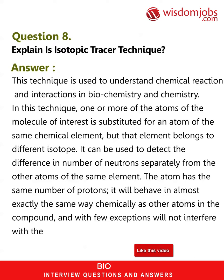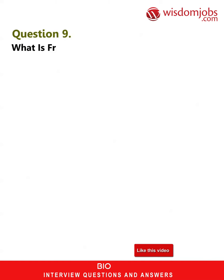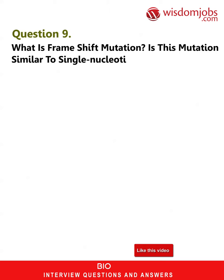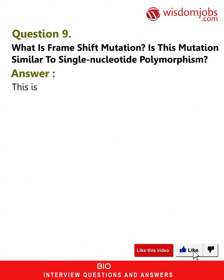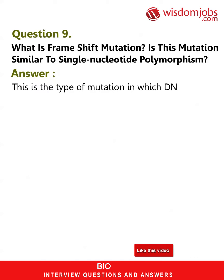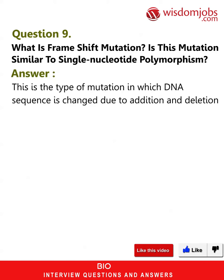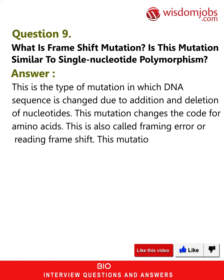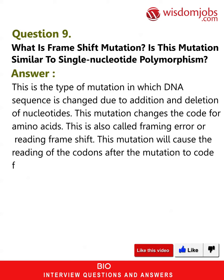Question 9: What is frameshift mutation? Is this mutation similar to single nucleotide polymorphism? Answer: This is the type of mutation in which DNA sequence is changed due to addition and deletion of nucleotides. This mutation changes the code for amino acids. This is also called framing error or reading frame shift. This mutation will cause the reading of codons after the mutation to code for different amino acids.